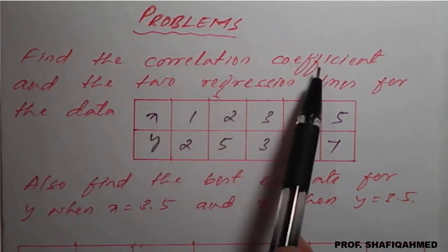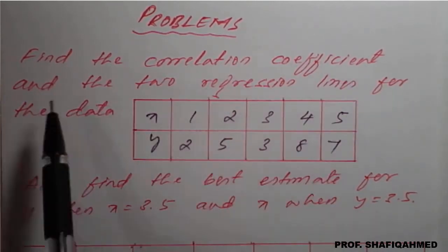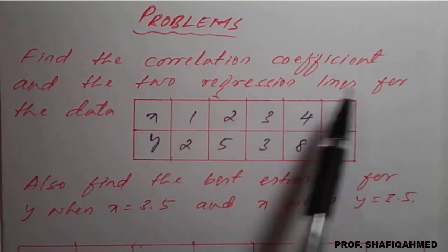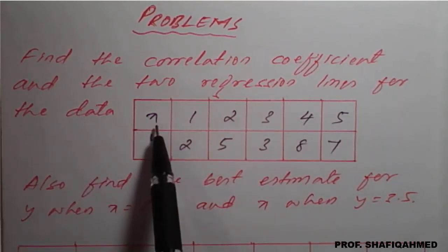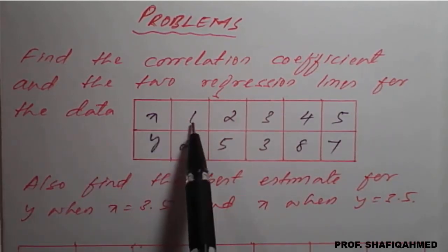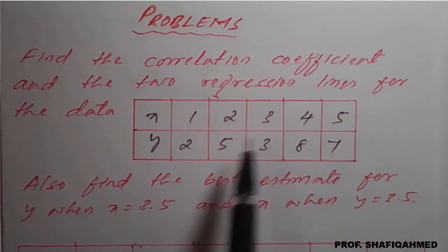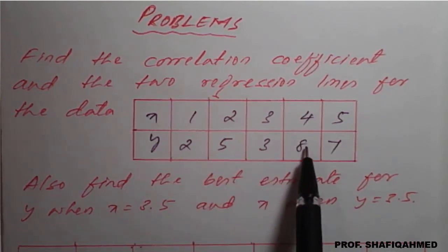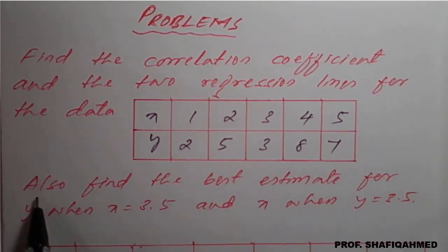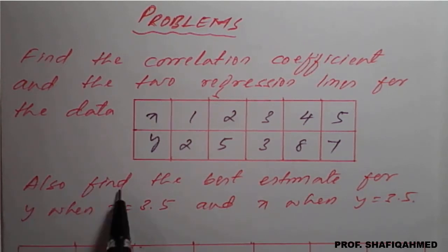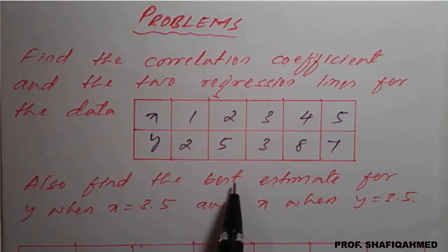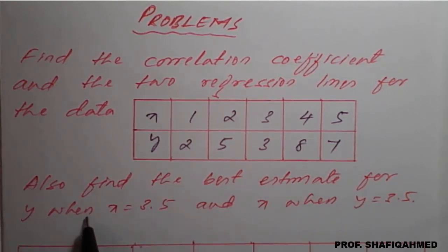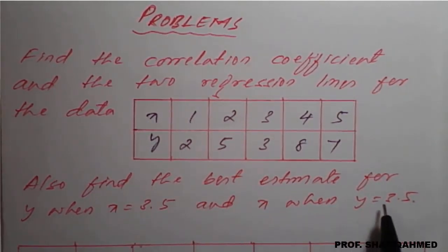The problem is: find the correlation coefficient and the two regression lines for the data. X values given are 1, 2, 3, 4, 5. Y values given are 2, 5, 3, 8, 7. Also find the best estimate for Y when X is equal to 3.5, and X when Y is equal to 3.5.